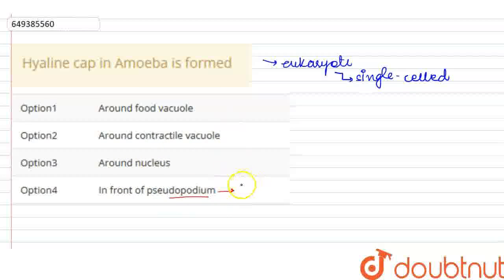Amoeba's pseudopodium is a very important structure. It helps it in locomotion, in movement, in feeding. It helps it in ingestion.